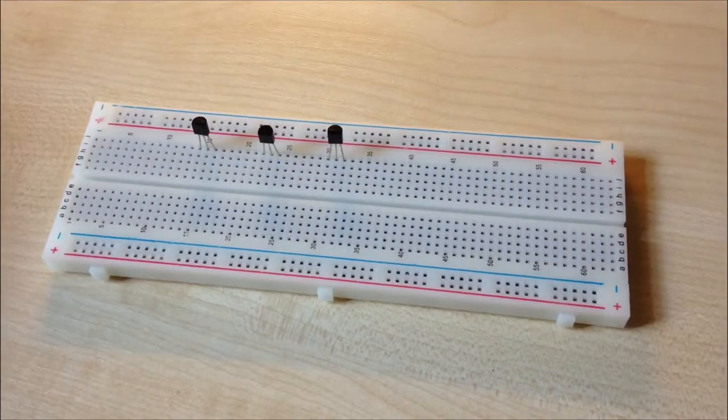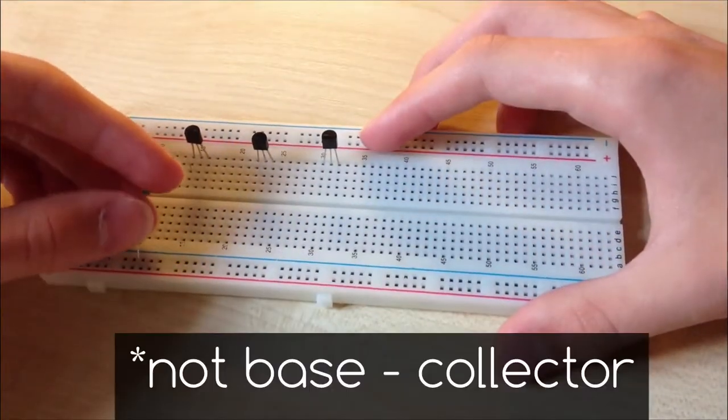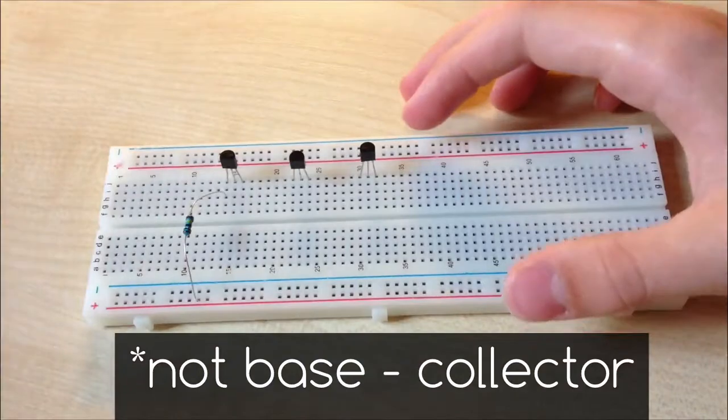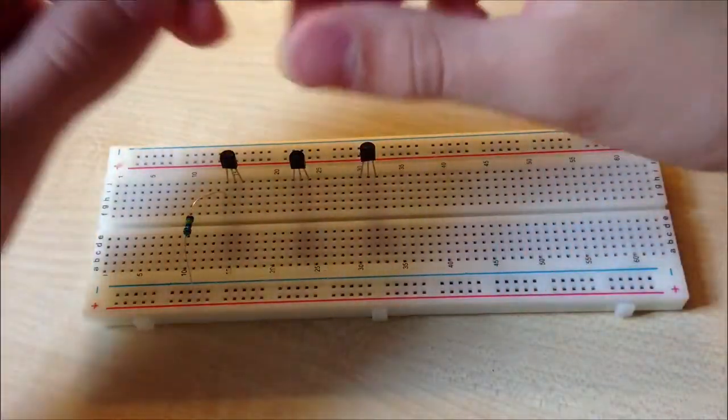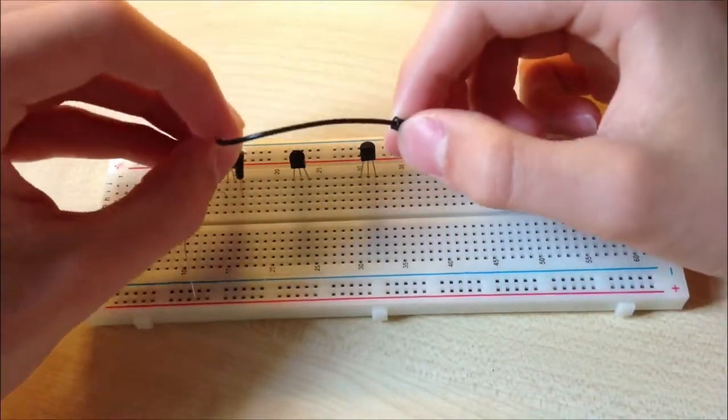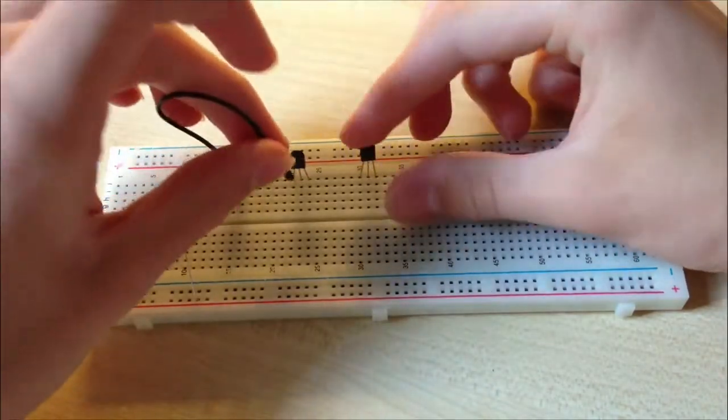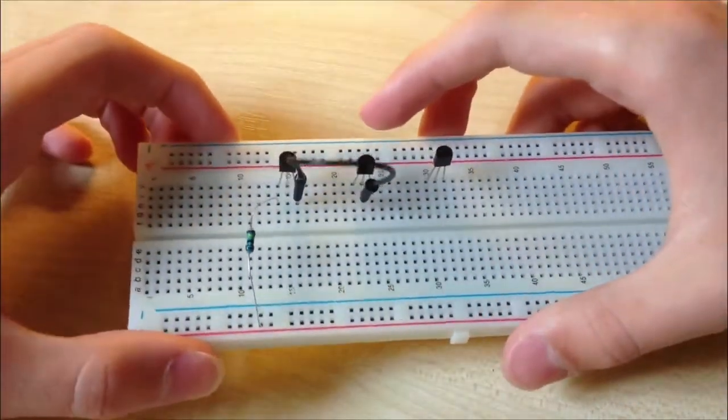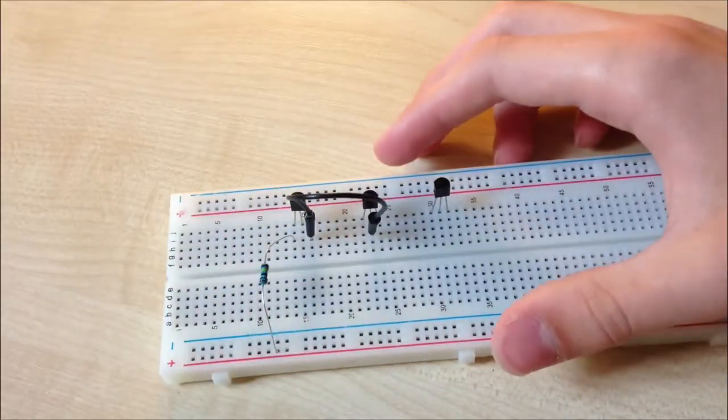Connect the 1 million ohm resistor to the base of the first transistor and positive rail. Emitter to second transistor's base. And on the base, connect a small antenna.